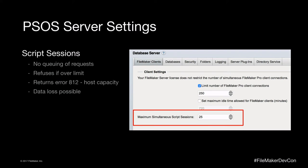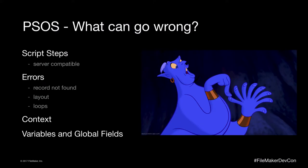In the server admin console, the default maximum simultaneous connections is set to 25 — you can increase it. But you don't want to offload everything or make your server act like an application server doing all the work. If you have a hundred users running Perform Script on Server at the same time, it's going to increase the load. It doesn't queue requests, so if you have 26 connections and the limit is 25, it will stop and not allow that 26th connection — potentially returning an error and losing data.